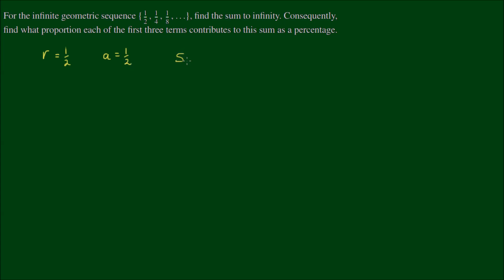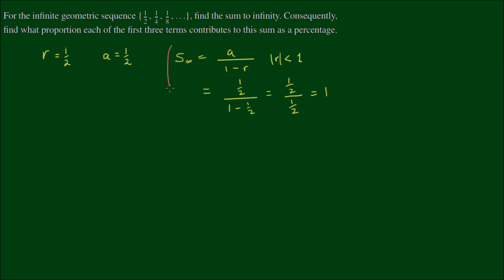The sum to infinity is given by the formula a divided by 1 minus r, for the absolute value of r less than 1. Substituting in our numbers: one-half divided by 1 minus one-half, which equals one-half divided by one-half, which of course equals one. So we've found the answer to the first part of this problem.